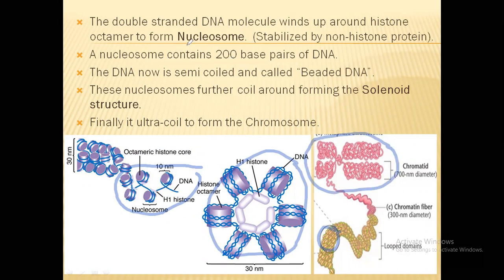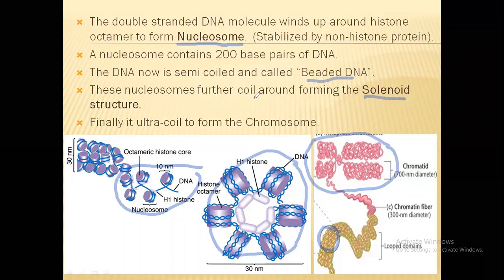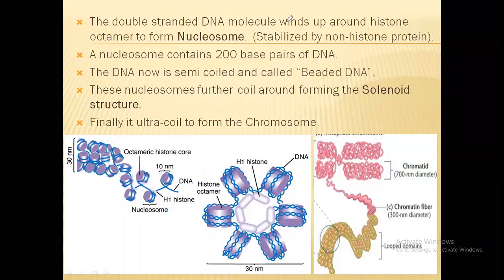Remember the three steps: first, formation of nucleosomes; then, formation of beaded DNA; that leads to the solenoid structure; and finally, the solenoid structure ultra-coils to form the chromosome. So from a single DNA strand, there are many steps involved.